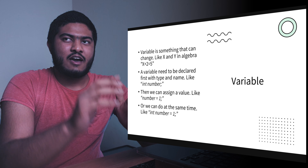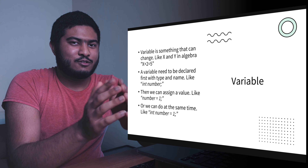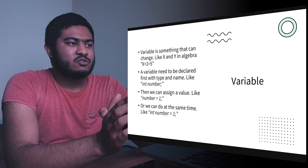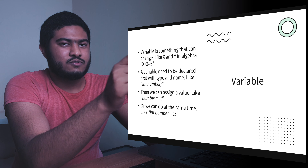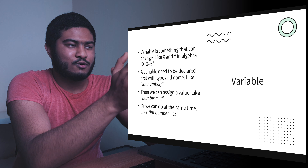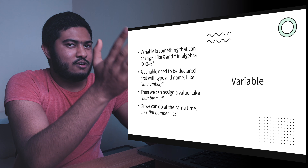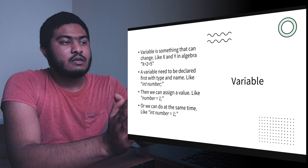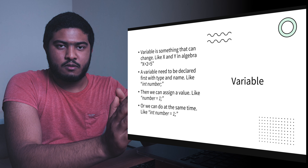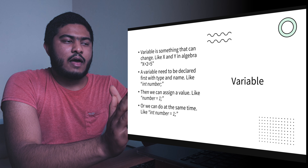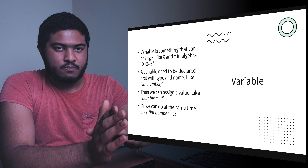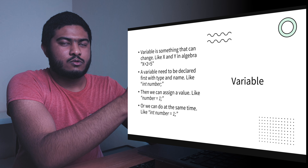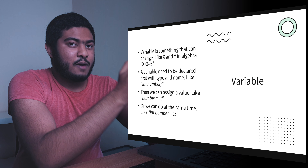Variables: a variable is something that can change. In algebra, things like x and y are variables that can store values — for example, x + 2 = 5, so x is 3. In Java, a variable needs to be declared first with a type and a name. The type can be integer, boolean, string, float, etc., followed by the name.